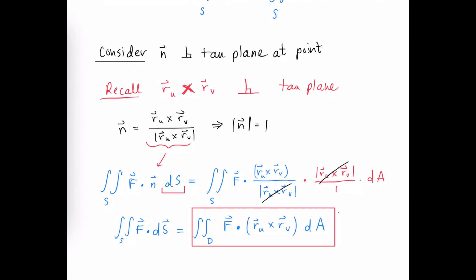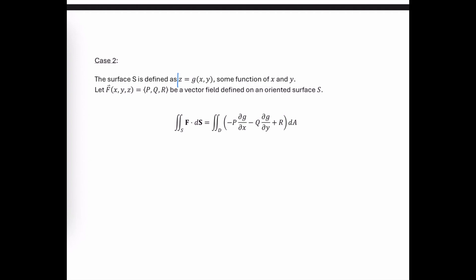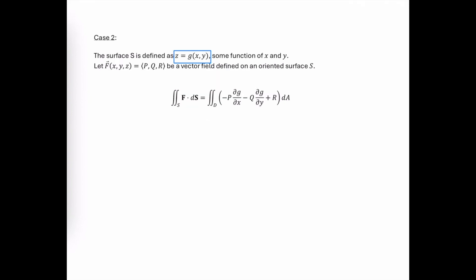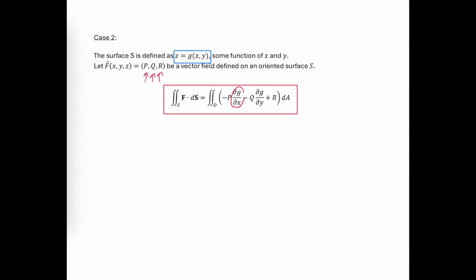But if our surface is just given as a function of x and y, we can leave our vector field in terms of x and y, and using those components — all functions of x and y — our surface integral can be evaluated using a different formula, where P, Q, and R are the components of the vector field, and the first partial derivatives are calculated from the surface function.